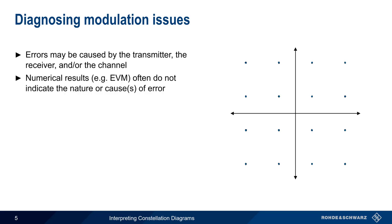There are many numerical measures of modulation quality, such as error vector magnitude or EVM, but these values often do not provide much insight into the nature or causes of the errors. However, many common types of error can be identified by visually inspecting or looking at a constellation diagram.